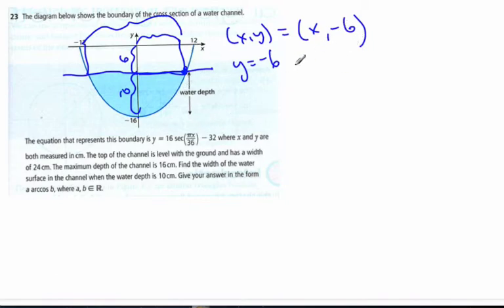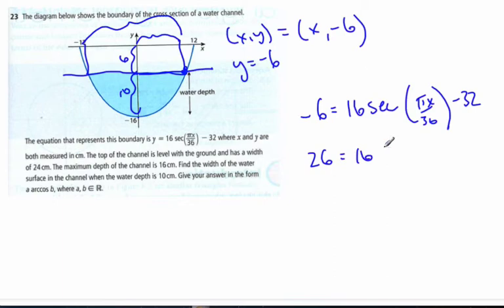I can take negative 6 and plug it in for y. So negative 6 equals 16 secant pi x over 36 minus 32. Add the 32 and I get 26 equals 16 secant pi x over 36.